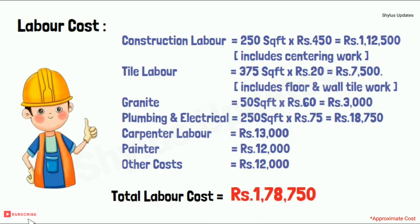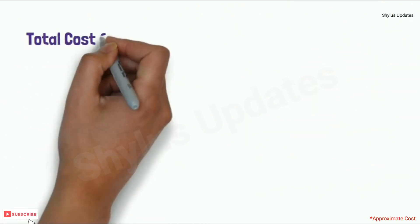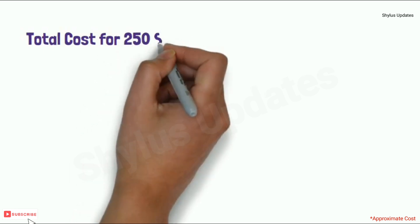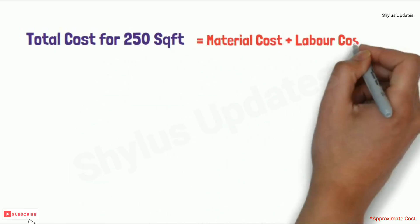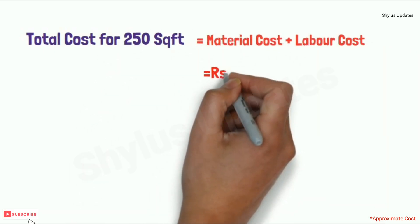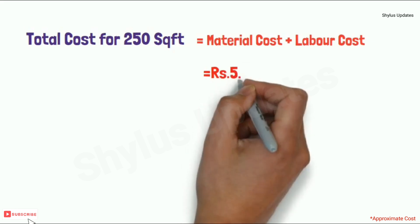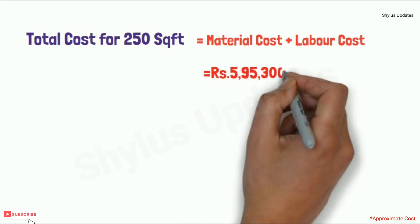Total cost for 250 square feet is equal to material cost plus labor cost, which is equal to rupees 5,95,300.